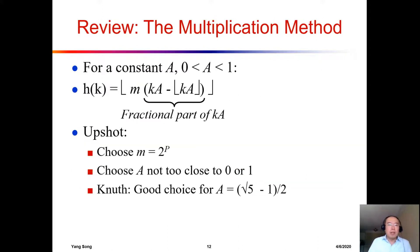The next one is called multiplication. For this multiplication, we have to pick a constant A, and this A is between 0 and 1. And then for a key K, we are doing M multiplied by K times A minus the integer part of K times A. So in these parentheses, we have the fractional part of K A.